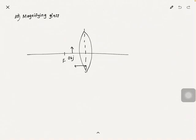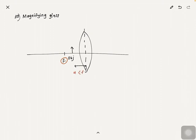Now let's learn about the magnifying glass. This is the focal point, and the object is usually in front of the focal point for a magnifying glass. The object distance u will be smaller than f, so the object distance will be shorter than the focal length.